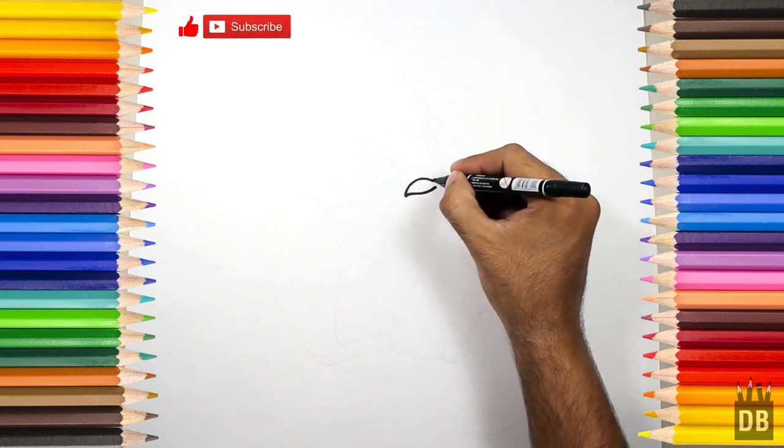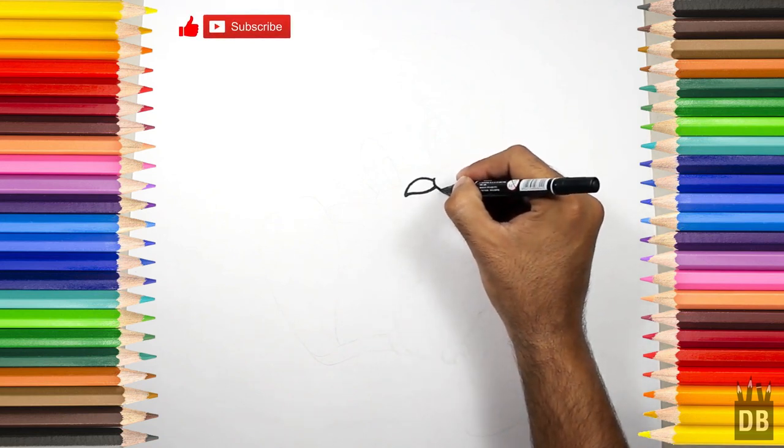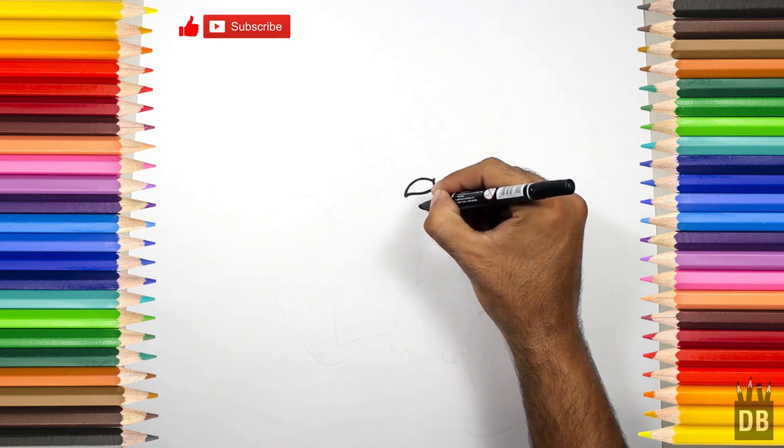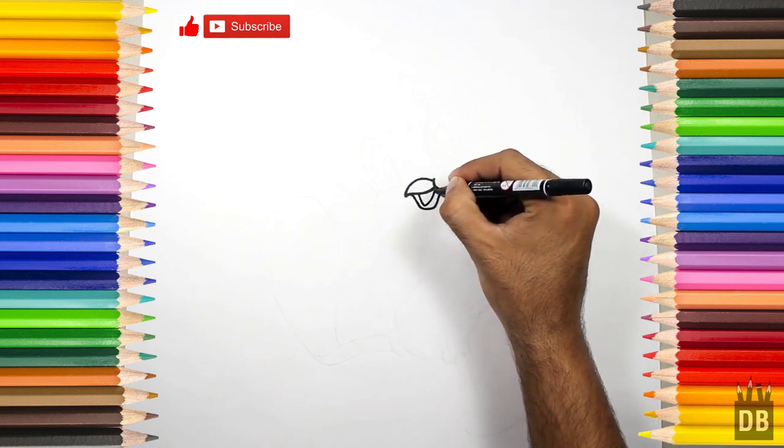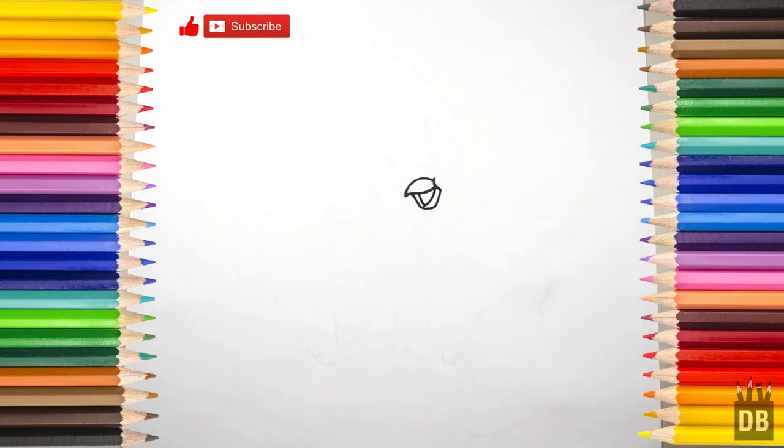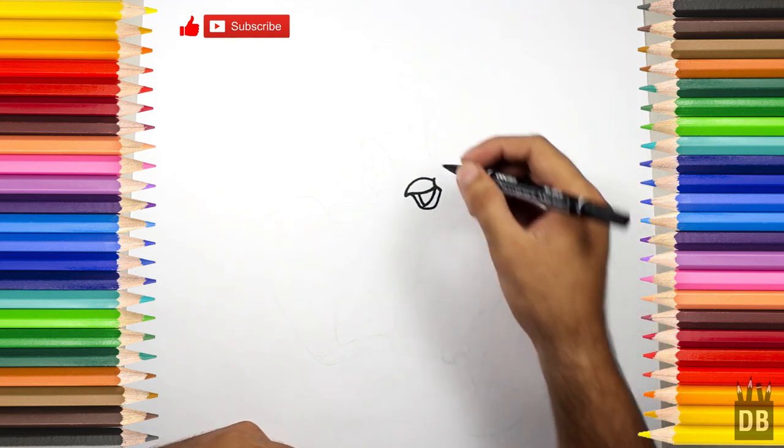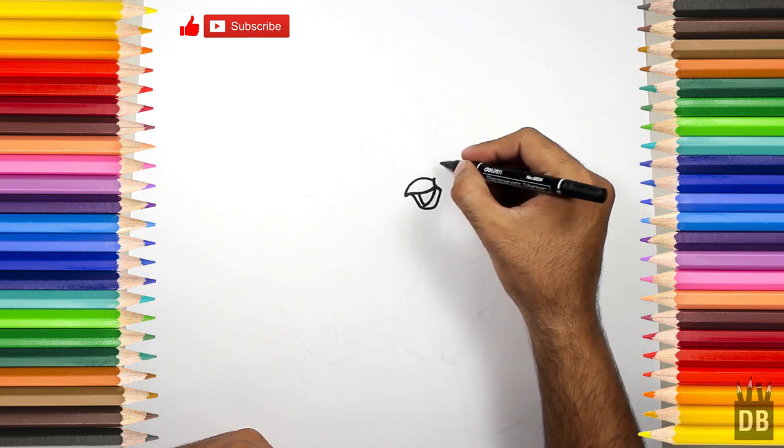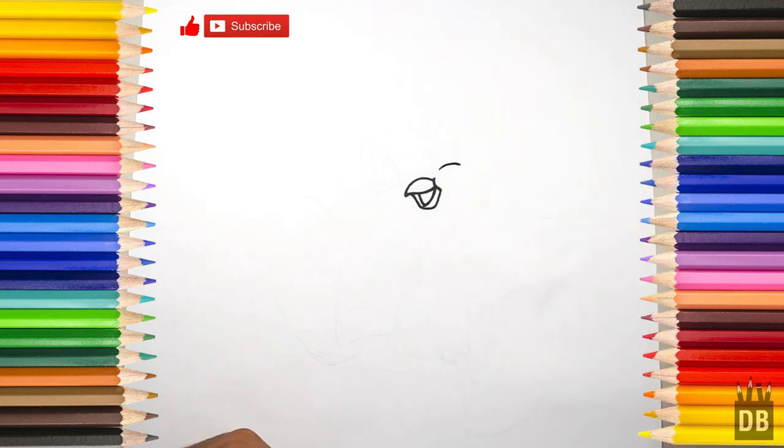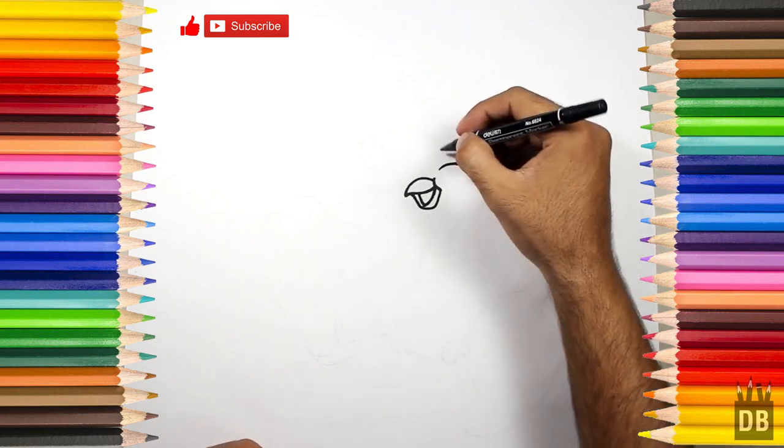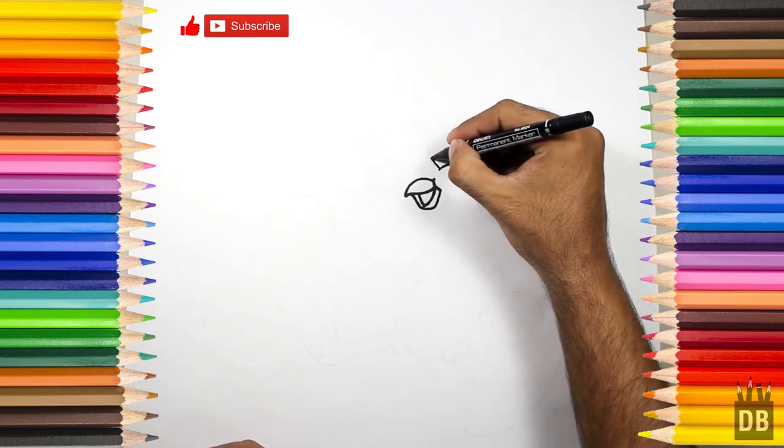We will make a V and his beak is ready. Now we have to make the eye. From a little distance we will make a curve line and we will make an oval eye.